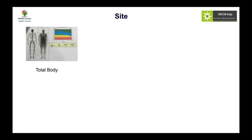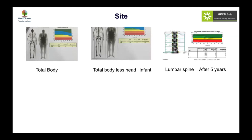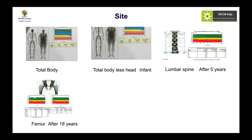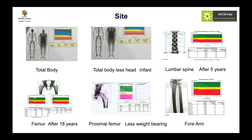Regarding which site to measure: total body including head is avoided. From infancy to two years, bone mineral content from total body less head is used. After two years, Z-scores of BMD can be used; lumbar spine is appropriate after five years of age. Avoid the femur until 18 years of age. In pediatric practice, you are mainly assessing either total body less head or lumbar spine. In non-weight-bearing patients, the proximal femur can be used.